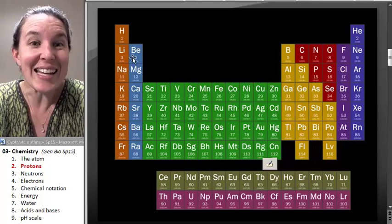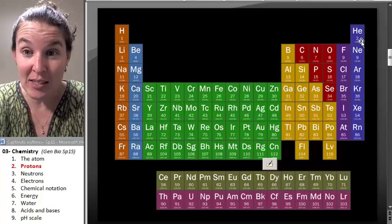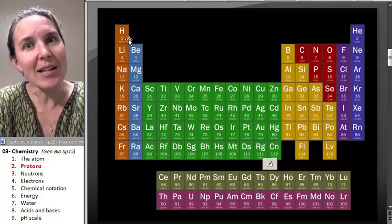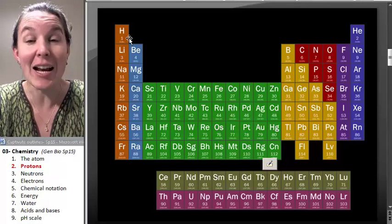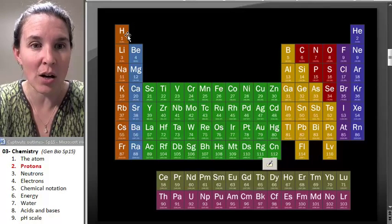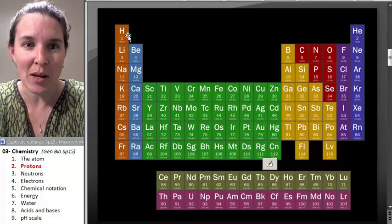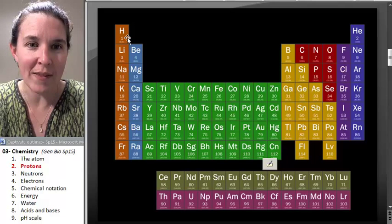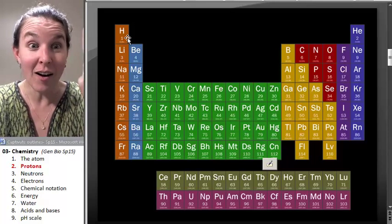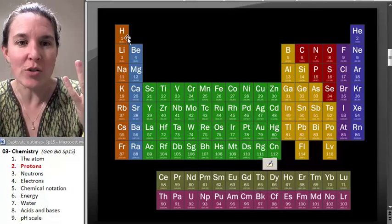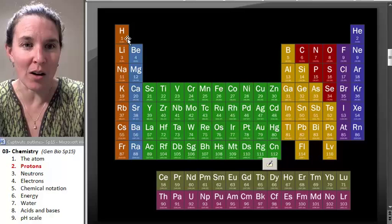Elements - each one of these boxes represents like a flavor of atom. Take a look at this hydrogen atom here. How many protons do you think are in a hydrogen atom? There's a giant hint right there by my arrow. One. It's number one. How'd you know? There's a one on it.